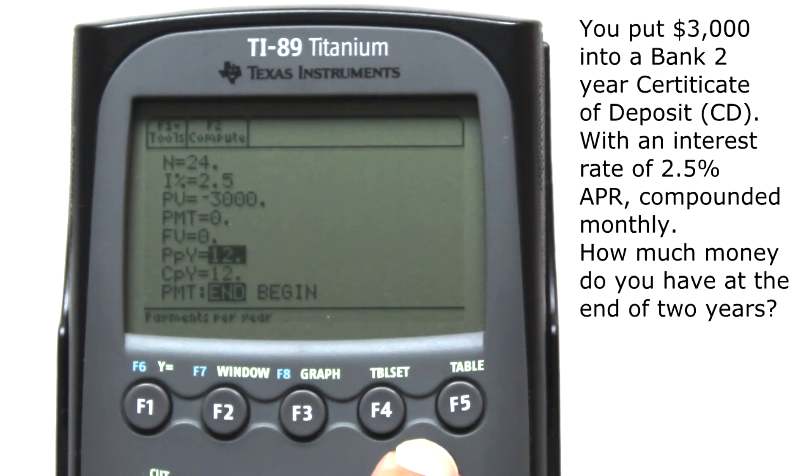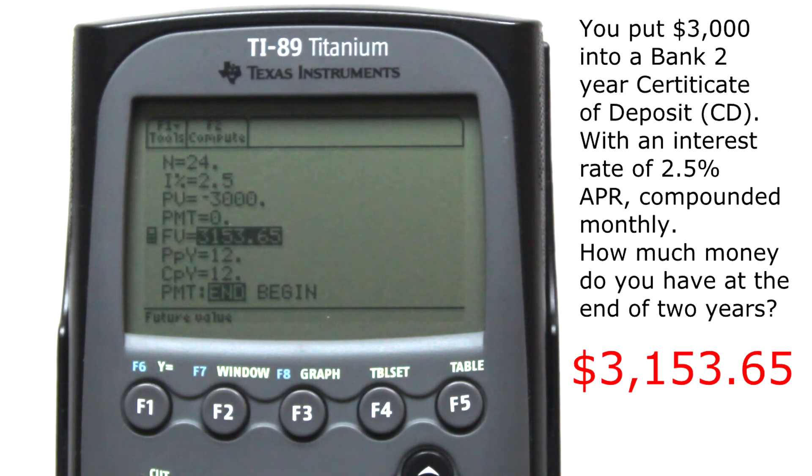Now move up to FV, Fair Value, and highlight it. Press the F2 key to calculate. There is the answer. At the end of 2 years, we will have $3,153.65.